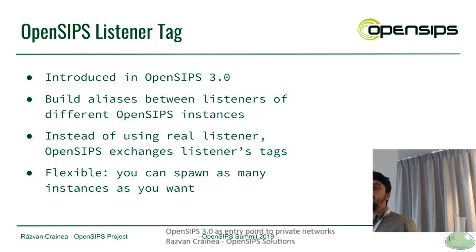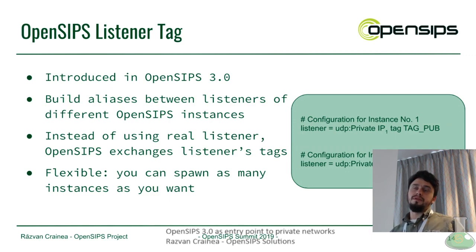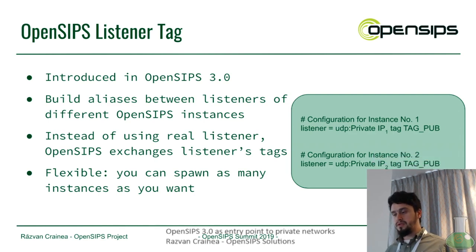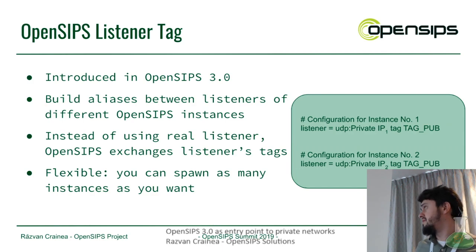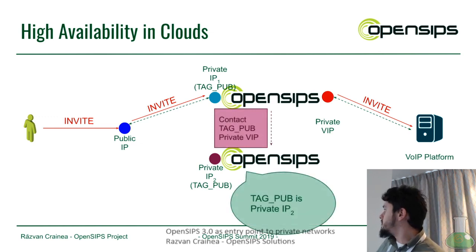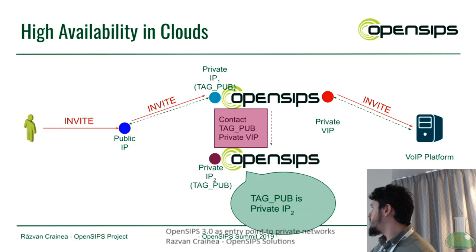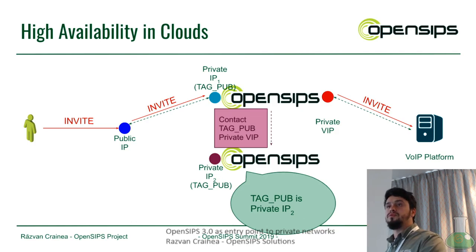That's why we invented listener tags, which Pete already presented. Listener tags are used to alias different OpenSIPs instances — you say this interface is equivalent to this IP on that OpenSIPs instance. In terms of configuration it's quite simple: you define the listener and add a tag with an arbitrary name. In our setup, we assign both interfaces the tag 'pub'. Therefore, when the message is replicated to the backup, OpenSIPs sees it knows who 'pub' is — it's private IP2 — so we expose the tag rather than private IP1.